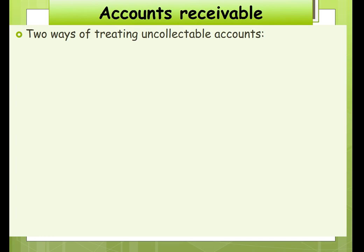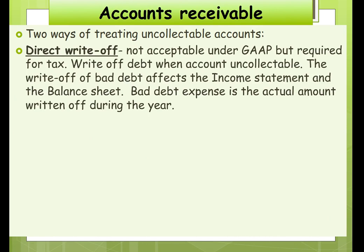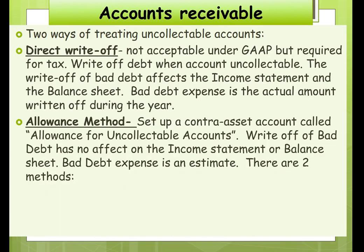Now we'll go to accounts receivable. We have two ways of treating uncollectible accounts because under GAAP we need to show receivables at net realizable value, meaning we must account for clients who won't pay. The direct write-off method is not acceptable under GAAP but is required for tax — you write off the debt when the account is uncollectible, and bad debt expense equals the actual amount written off during the year. The allowance method uses a contra asset account called allowance for uncollectible accounts; the write-off of bad debt has no effect on the income statement or balance sheet — it's the estimate of bad debt expense that affects both.